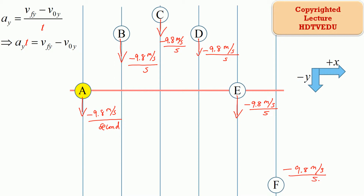Don't forget: positive x is defined as to the right, and negative y is vertically down. So acceleration due to gravity is negative 9.8 meters per second per second. That means every second, the vertical velocity component changes by negative 9.8 meters per second.